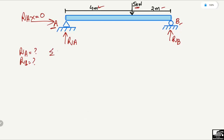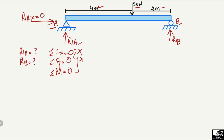To find the support reactions, we have three equilibrium equations: summation of horizontal forces equals zero, summation of vertical forces equals zero, and summation of moments equals zero. We cannot use the horizontal equation since there is no horizontal load. We also cannot immediately use the vertical force equation because it has two unknowns, RA and RB — that equation is only useful when there is one unknown.